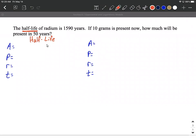You always want to begin with the half-life information. Let's pick out some of the key numbers that are given to us. The half-life of radium is 1590 years. So what that means is it's going to take 1590 years for whatever you start with to only have half of that remaining. If 10 grams is present now, that's looking like what we started with. How much will be present in 50 years? So the 50 years, that's like a follow-up question. That's important to notice on this.